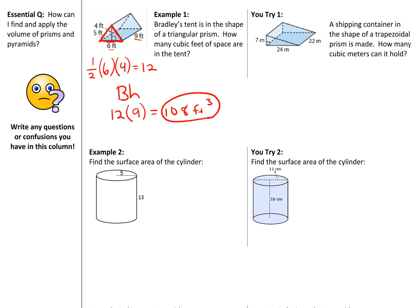Alright, so in You-try-1, we started with the area of the base. Which is 1 half of 24 times 7. Half of 24 is 12. 12 times 7 gives you 84. And so when we look at the area of the base times height, 84 times 22. Which gives us a total volume of 1848 meters cubed.